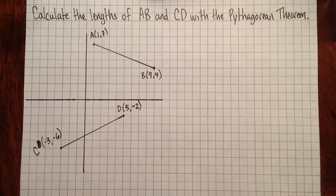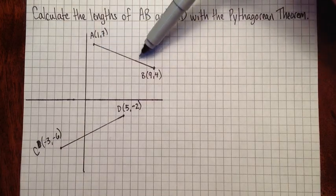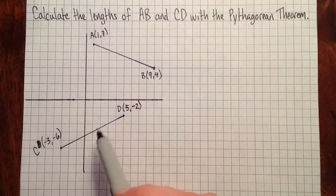Okay, so this question asks us to calculate the length of AB and CD with the Pythagorean Theorem.